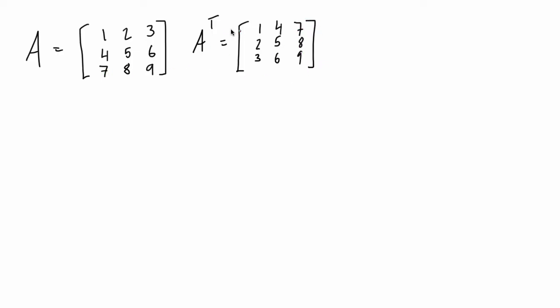All right, what we could have done is we could have taken column 1 and set it as row 1. So column 1 here is 1, 4, 7. Then if we set column 1 to row 1, then we get that 1, 4, 7. Column 2 is 2, 5, 8. Row 2 is 2, 5, 8. Column 3 is 3, 6, 9. Row 3 is 3, 6, 9, after we have applied the transpose.